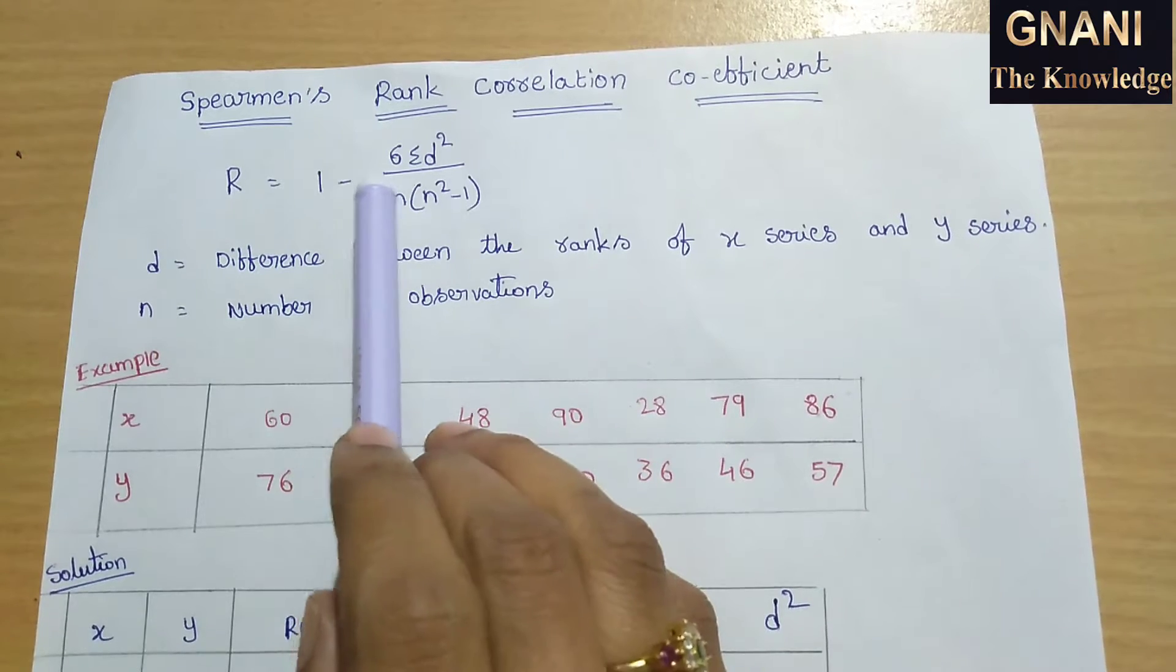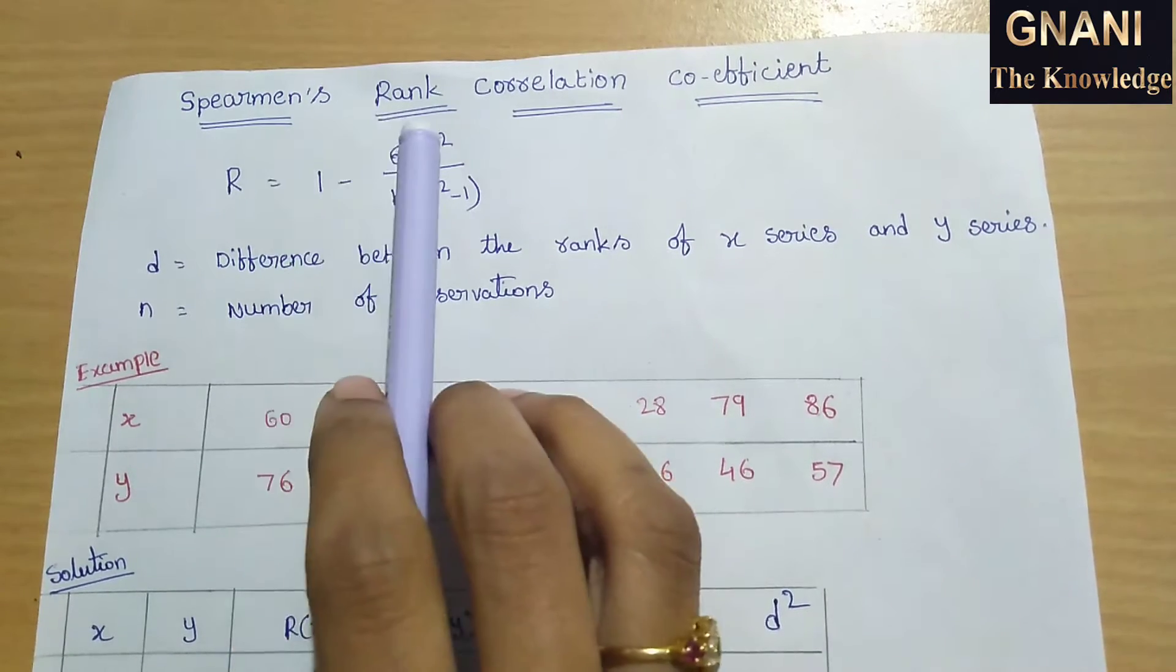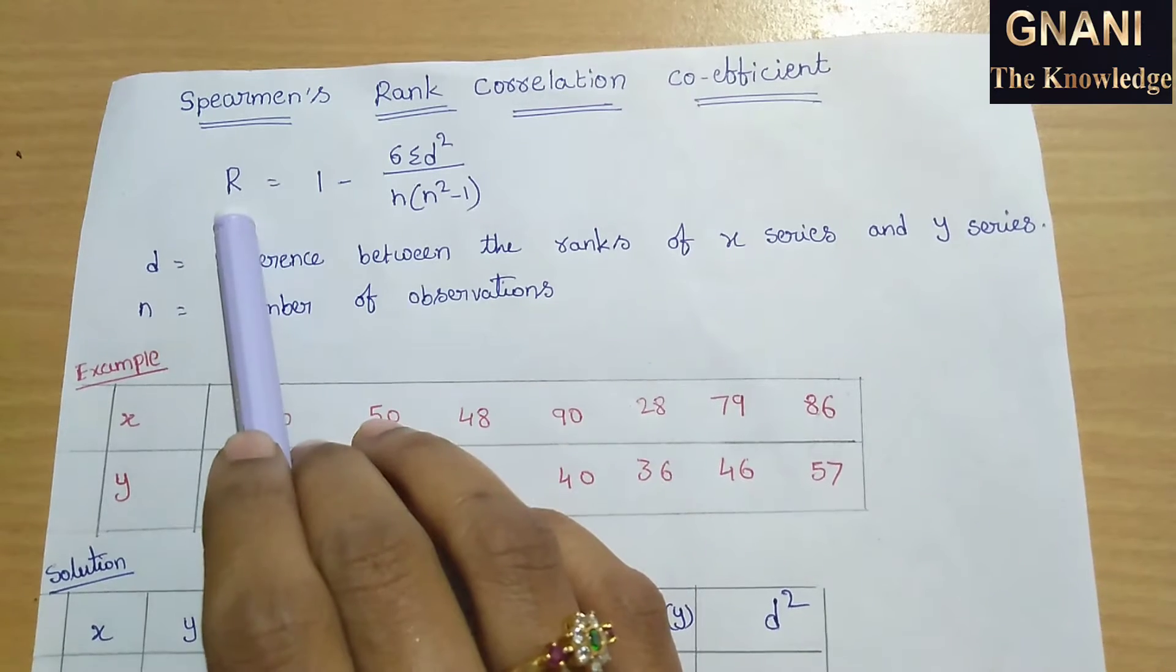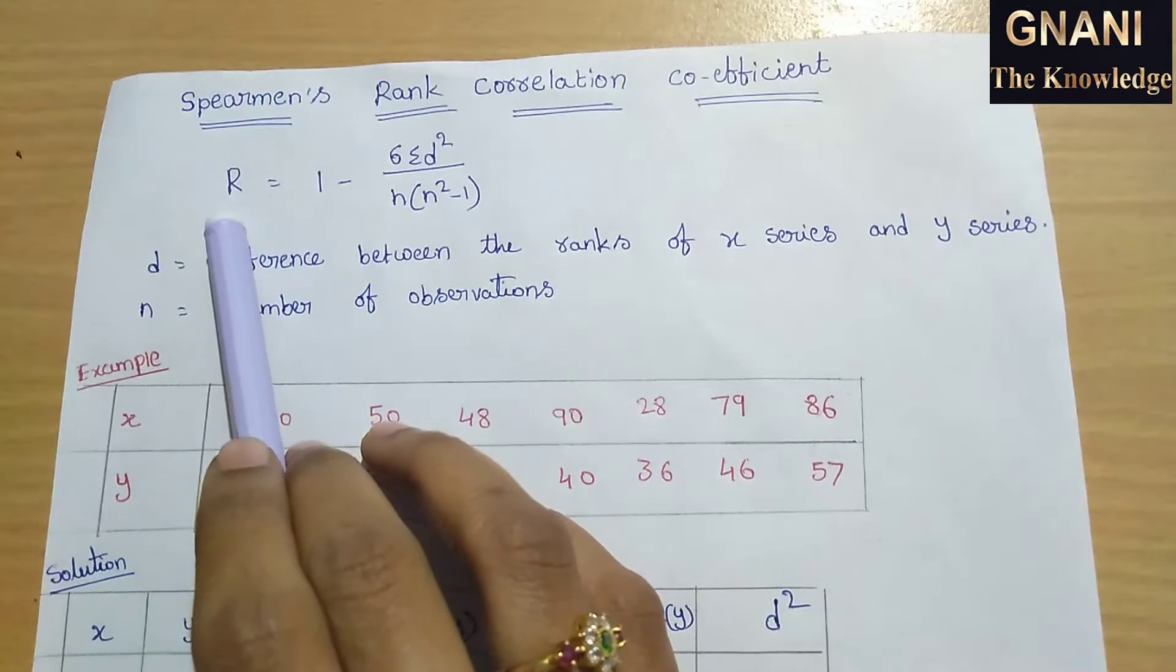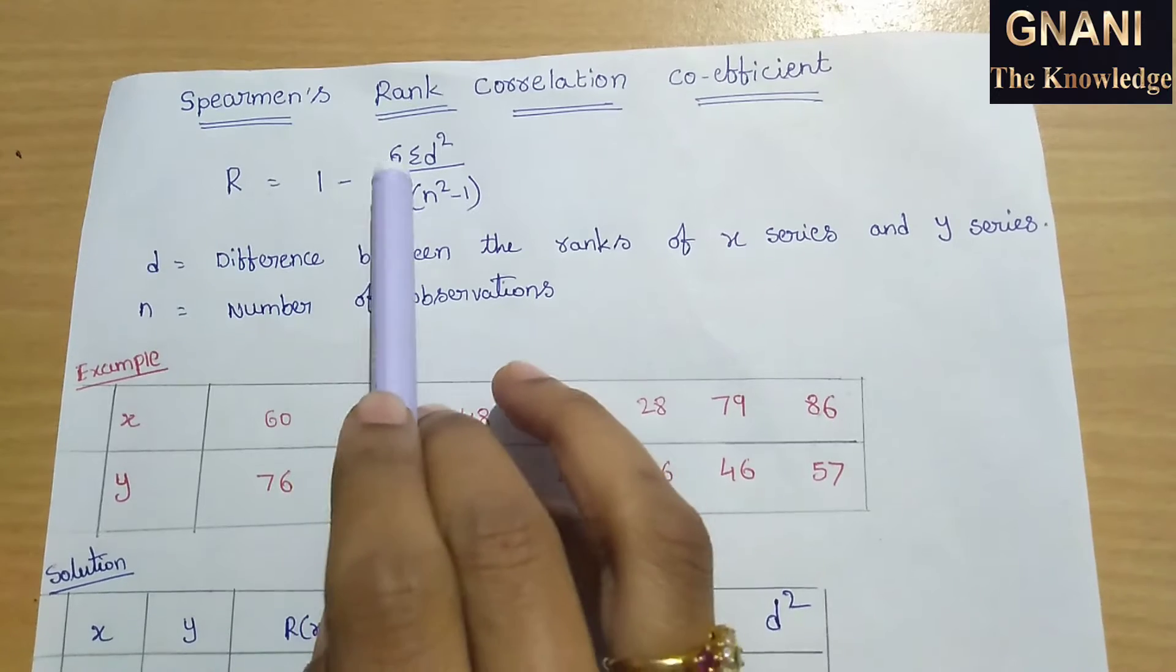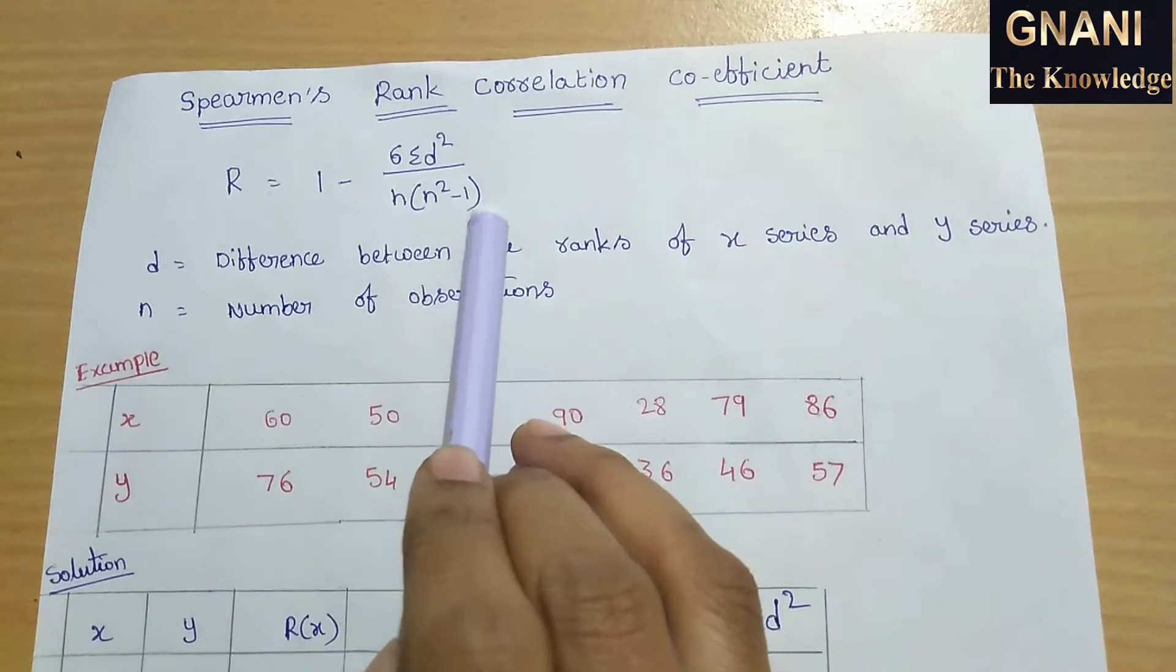Here, what is the formula? I will denote the Spearman's Rank Correlation Coefficient. Then R equal to 1 minus 6 summation d square by n into n square minus 1.